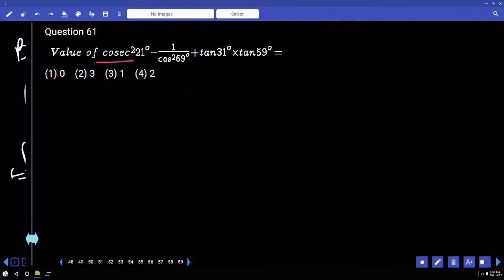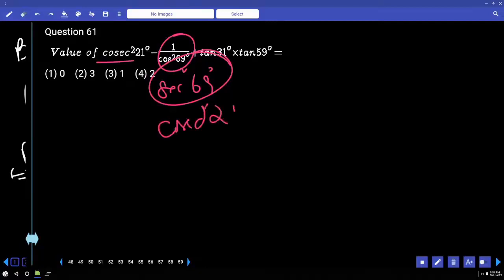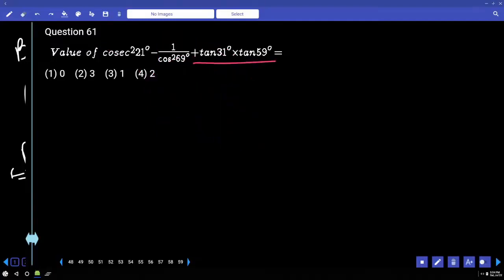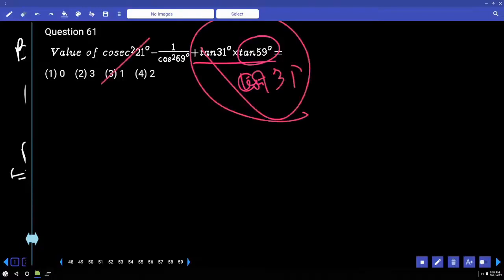Cosecant square, this is actually secant square. Secant square 69 can be written as cosecant square 21. Tan 31 into tan 59 that is 1, because this is tan 31, cot 31. Tan into cot again 1. Answer is 1 option 3.